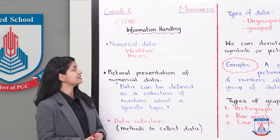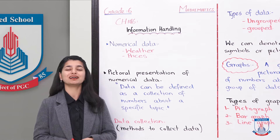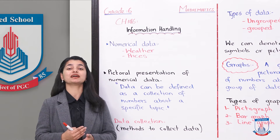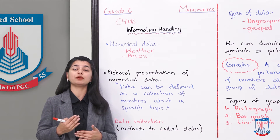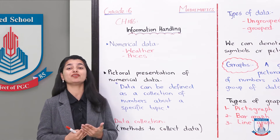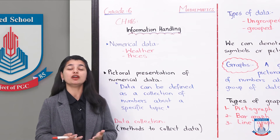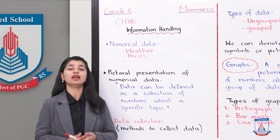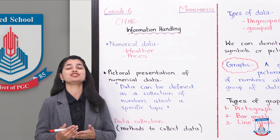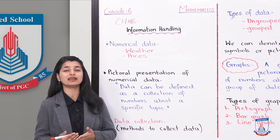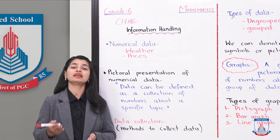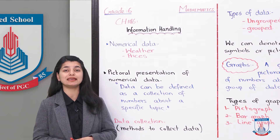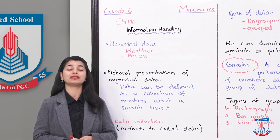Similarly, if you look at prices — prices are different things: the rate in the market, the rate of inflation, the exchange rate, and the rate of change over time, which forms a pattern. This is all part of what we see in information handling when we look at data.